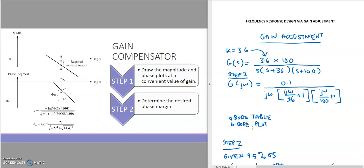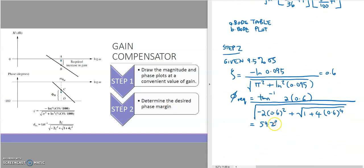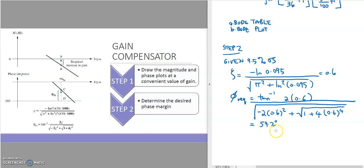Step 2: based on the Bode plot magnitude and phase plot, we determine the desired phase margin. The question gives 9.5 percent overshoot. Using the formula to determine the damping ratio from percent overshoot, and then the required phase from the damping ratio, we get: damping ratio equals 0.6, and using this value we determine the required phase is 59.2 degrees.